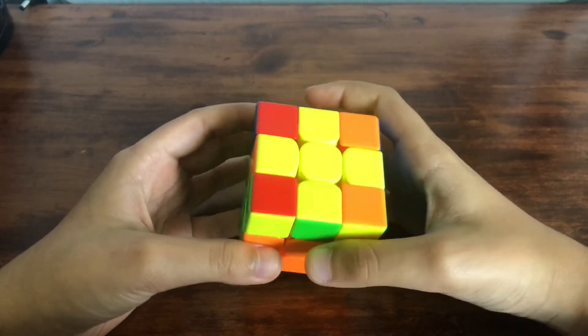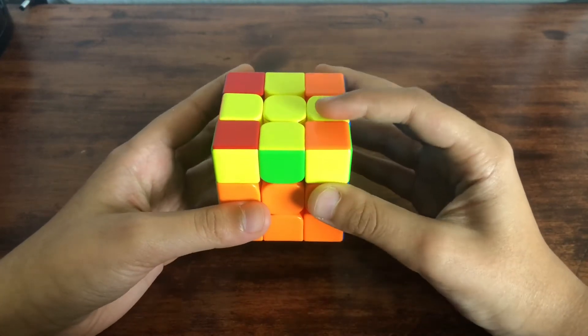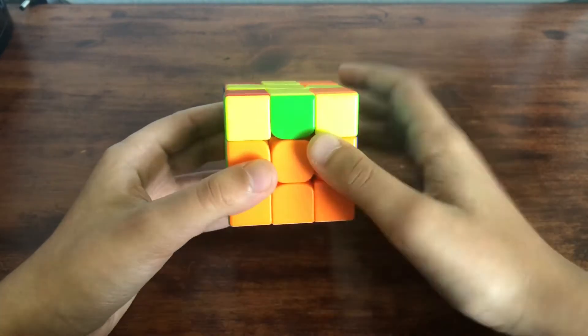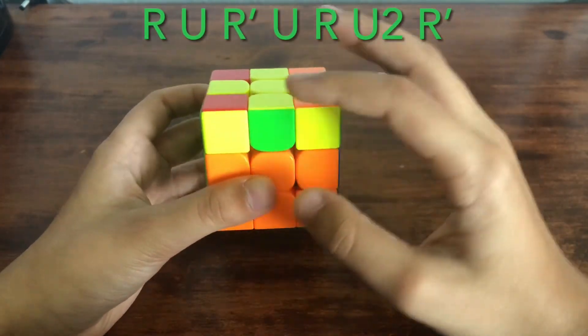So your cross could look different than this, but I'm just going to show you everything that you can get. Basically, if you have this one where these two and these two are opposite facing, you just do that algorithm holding it like this.